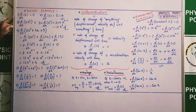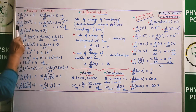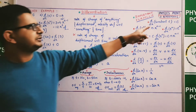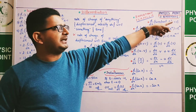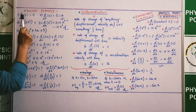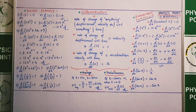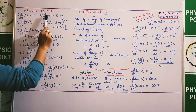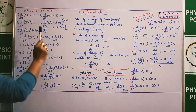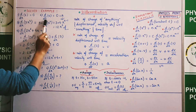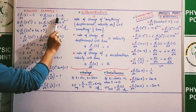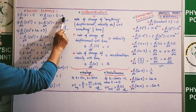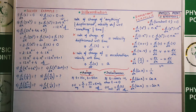पहला example: d/dx of 6 — 6 constant है, तो constant का differentiation = 0। Similarly अगर velocity constant है तो d/dt of v = 0, means rate of change of velocity with respect to time = 0। अगर velocity constant है तो acceleration भी 0 हो जाएगा।